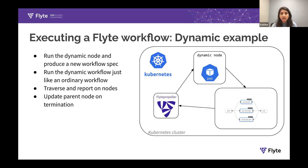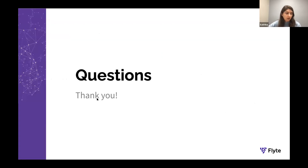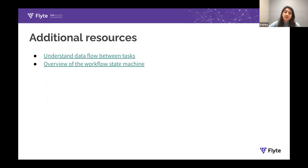Once that node completes, Flight Propeller continues traversing the nodes within the DAG. That is workflow execution. That's all for this quick lightning talk, but if you have any questions, I'm happy to help answer them. There are also a few more resources if you're interested in learning more about how data flow works between tasks or understanding the broader workflow state machine that Flight Propeller operates on. Thanks so much.